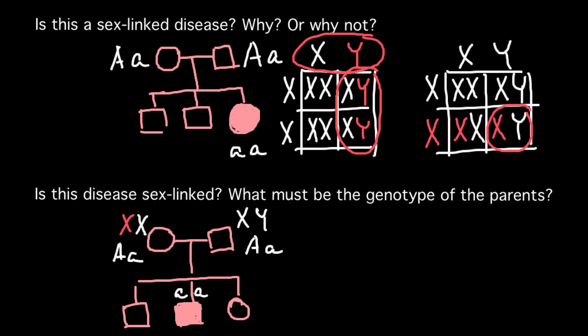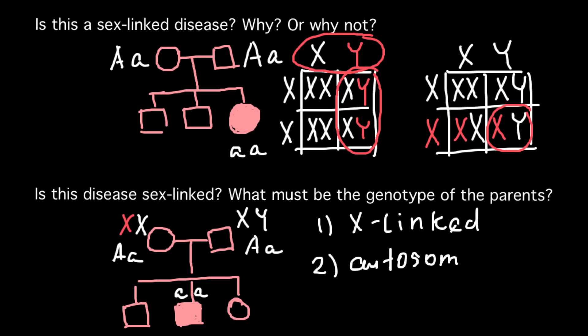So we cannot say for sure, because this pedigree is very small. If we had a pedigree spanning three, four, or five generations, we would be able to tell more precisely whether it is autosomal recessive or X-linked. So the first possibility would be an X-linked genetic disorder, and the second possibility would be an autosomal recessive genetic disorder.